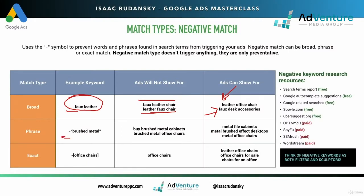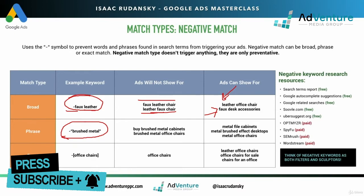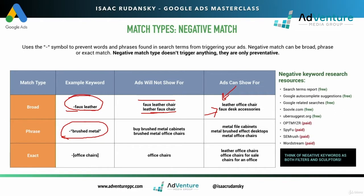Now let's take a look at negative phrase match. With negative phrase match, enclosed in quotation marks, I'm telling Google that when this specific phrase in this specific order shows up in any search term, I do not want my ad to show. For example, negative 'brushed metal' means ads will not show for 'buy brushed metal cabinets' or 'brushed metal office chairs.' But ads can show for 'metal file cabinets' or 'metal brushed effect desktops,' because even though the words appear, they're in a different order — and with phrase match, the words in quotation marks must appear in that exact order.